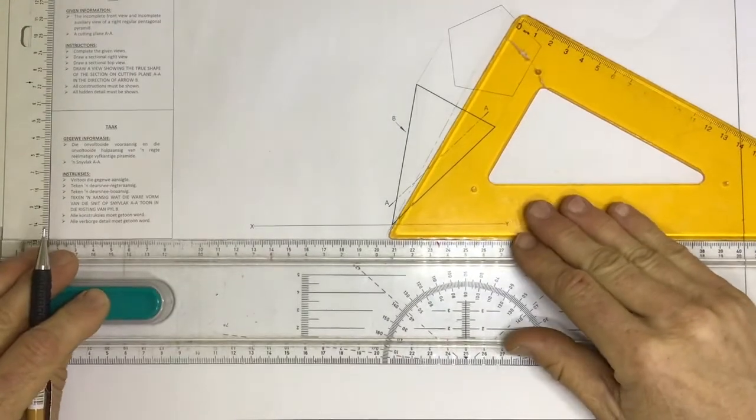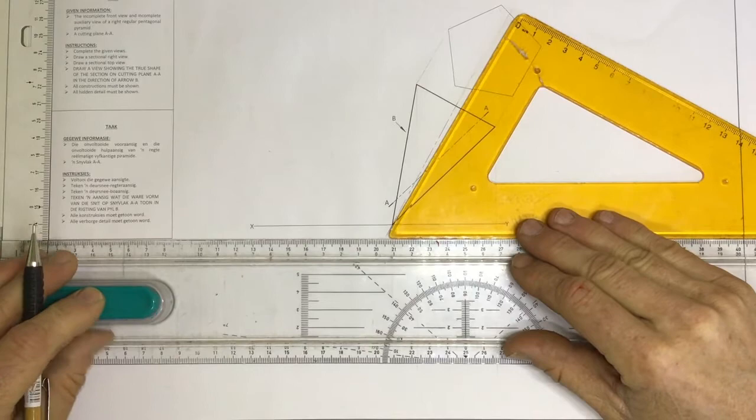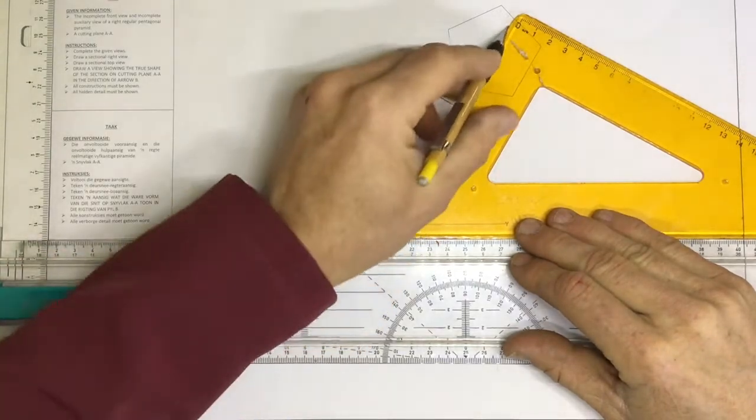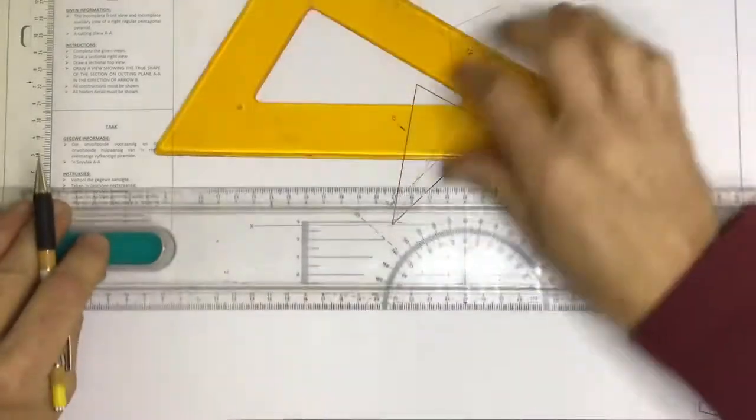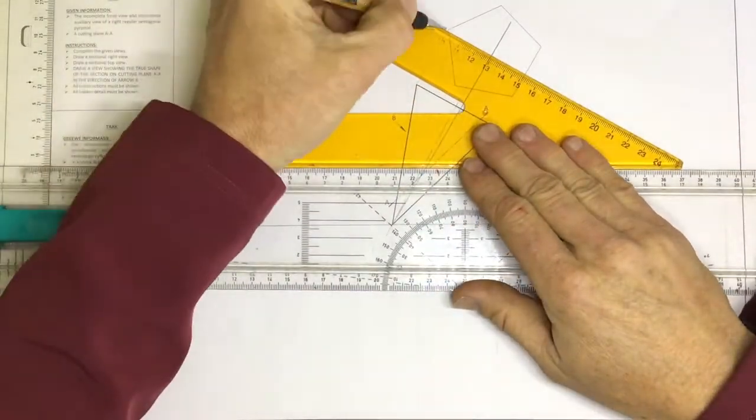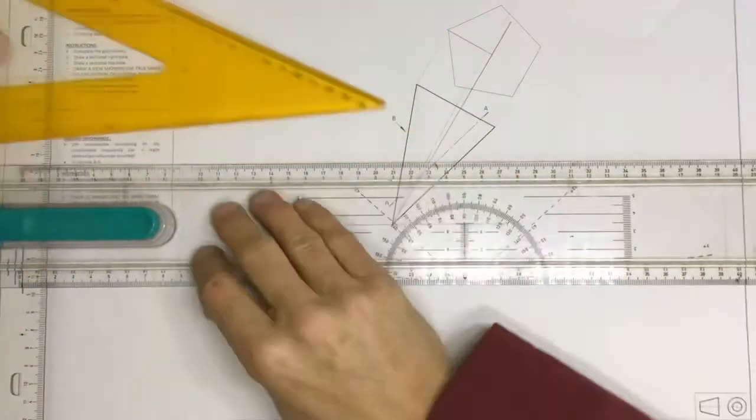I'm going to take a line going up at that 30 degrees over here, straight up over here. And from that I can take a line going across from that intersection of those two lines and there is the center of the pyramid.